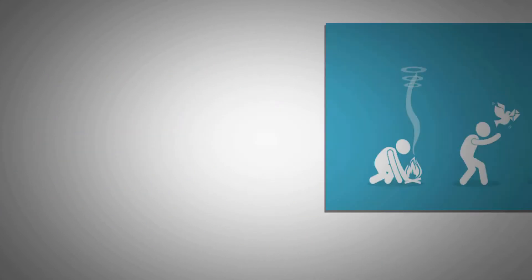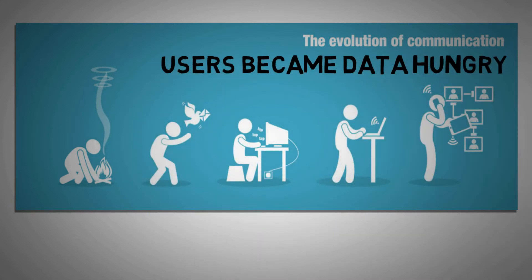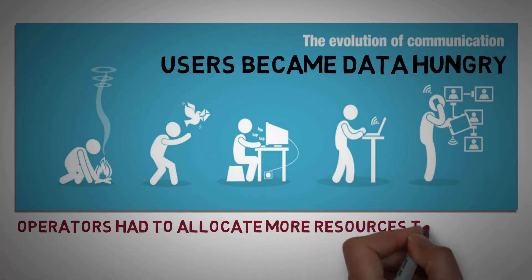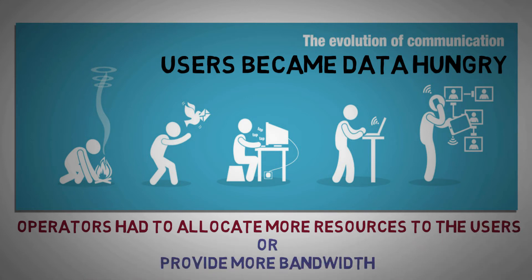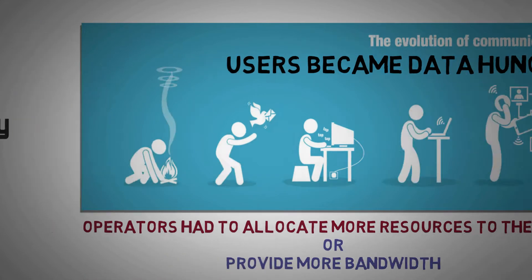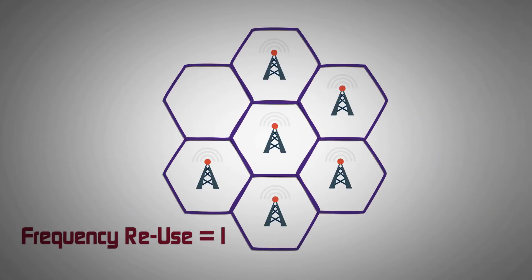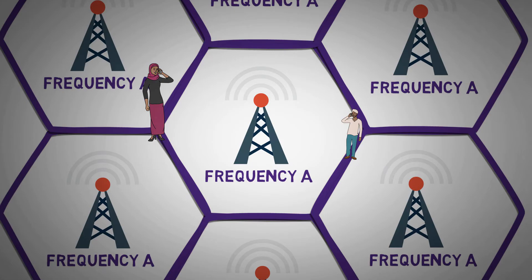But with the evolution of communication, users became data hungry and operators had to allocate more resources to the users or provide them with more bandwidth. To overcome this, a frequency reuse factor of one is used in 4G — that is, all cells use the same frequency. As a result, at the cell edge, users may face intercell interference.